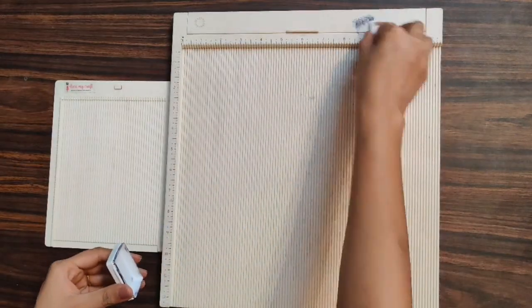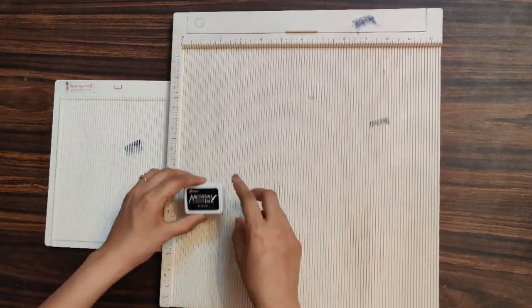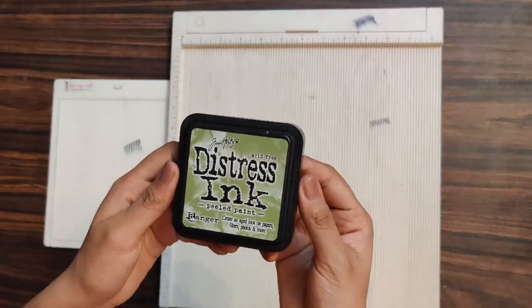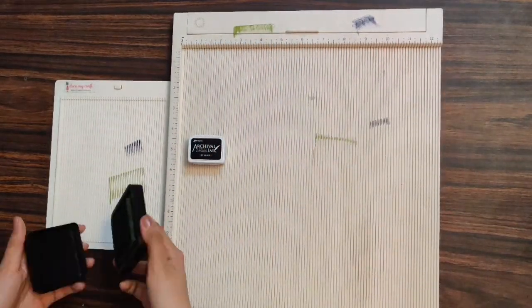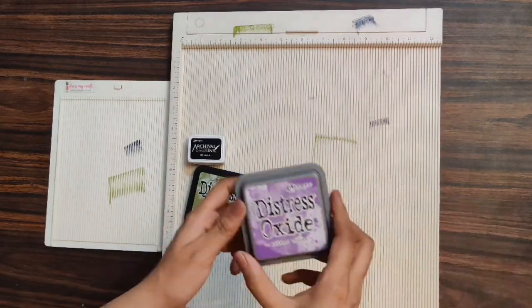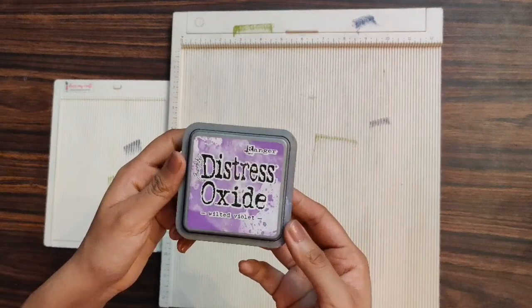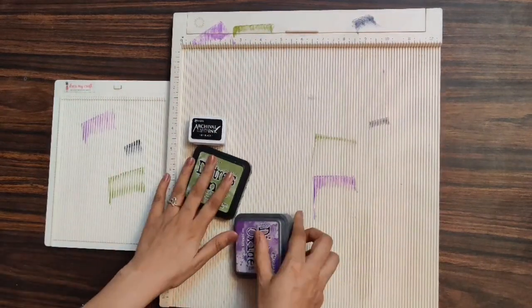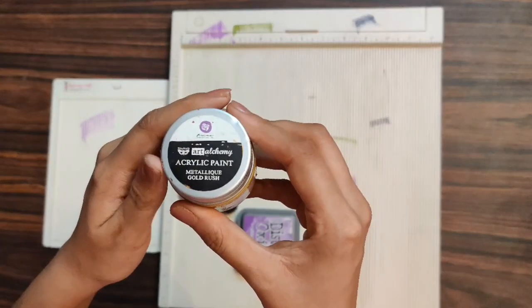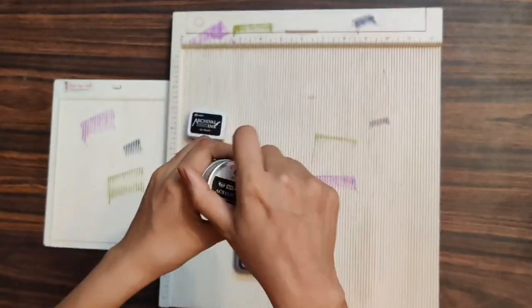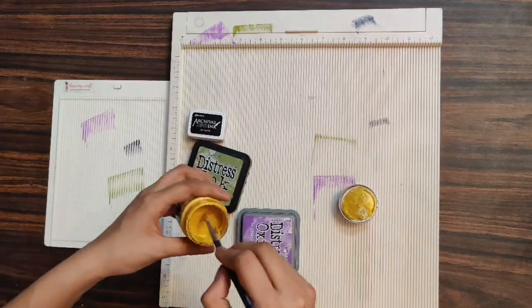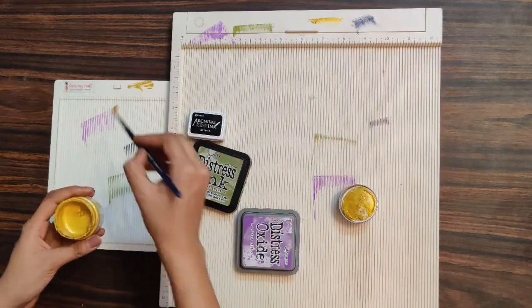The first thing which I am going to apply on my scoreboard is this archival ink in the shade jet black. I'm using a distressing tool. What I'm going to do is I'm just applying some of the products which might be on your scoreboard. This is the distress oxide ink, so you know that you can get rid of all these marks as well.